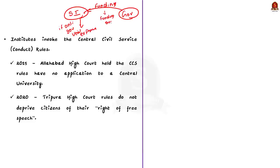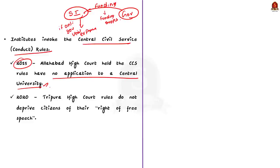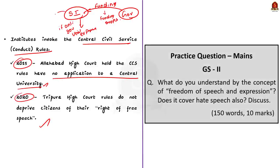This self-censorship affects the fundamental right to free speech. In some cases, like the institute in Punjab, they invoked the Central Civil Service Conduct Rules that prohibit criticism of the government. But in 2015, the Allahabad High Court held that these rules have no application to a central university. Again in 2020, the Tripura High Court ruled that even when the rules apply, they do not deprive citizens of their right to free speech, which is a fundamental right. Despite all these rulings, self-censorship is rising, curtailing academic freedom in scientific institutions.